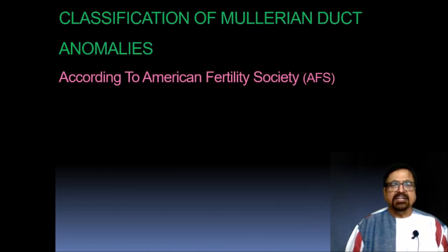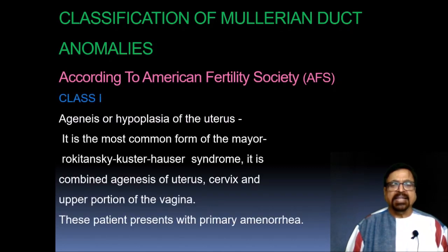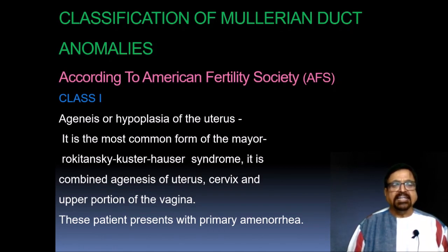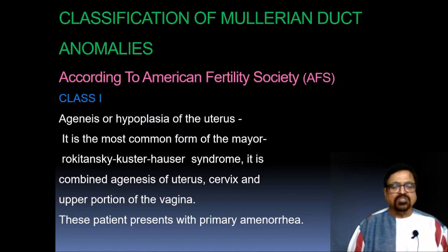According to the American Fertility Society (AFS), Mullerian duct anomalies are classified into different classes. Class 1 is agenesis or hypogenesis of the uterus, the most common form being MRKUH syndrome, popularly called MRS. It is a combined agenesis of the uterus, cervix, and upper portion of the vagina. These patients present with primary amenorrhea.